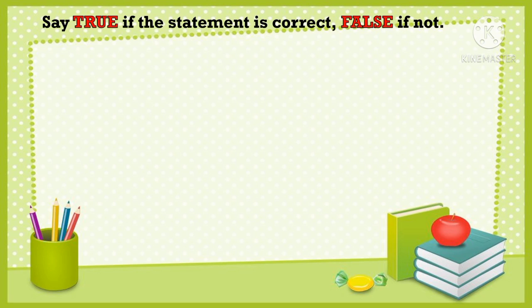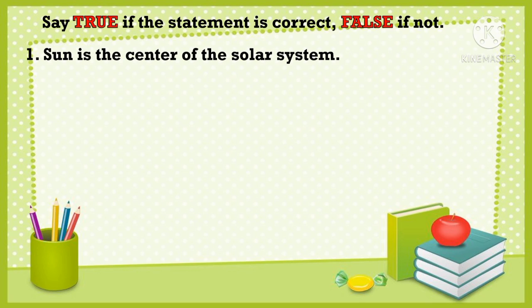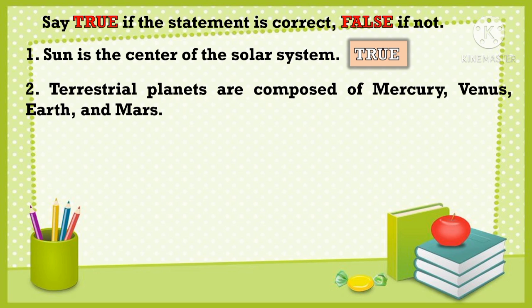Say true if the statement is correct and false if not. Statement 1: The sun is the center of the solar system. If your answer is true, then you are correct. Statement 2: Terrestrial planets are composed of Mercury, Venus, Earth, and Mars. The answer is true. Excellent!